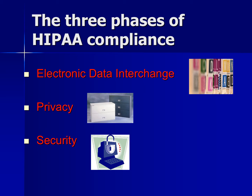Privacy has to do with chart information, sign-in sheets that require personal information on a patient, speaking about patient information in public, and anything that deals with your computer screen being vulnerable to outside individuals by not having a screen protector or having it turned in a way that doesn't conceal patient data. Security has to do with password protection, firewall protection, as well as locked cabinets and drawers that contain patient private information. This is all part of the three phases of HIPAA compliance.